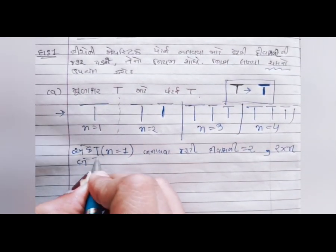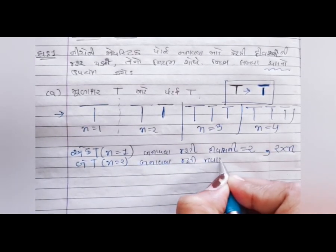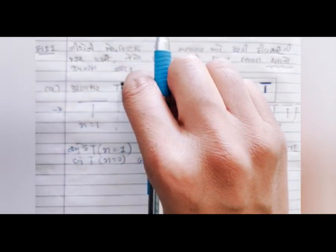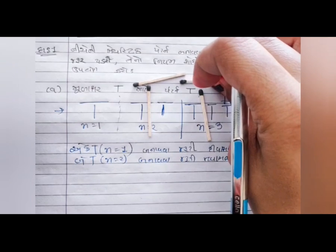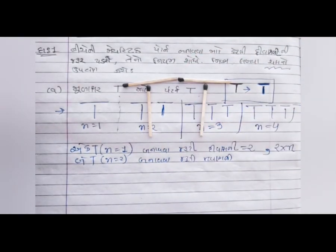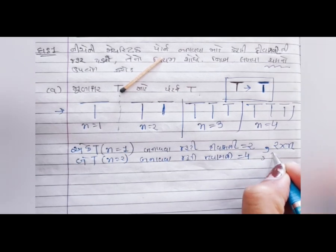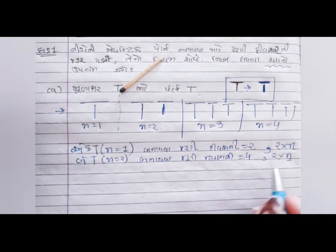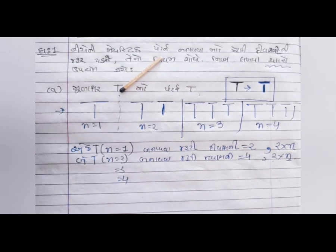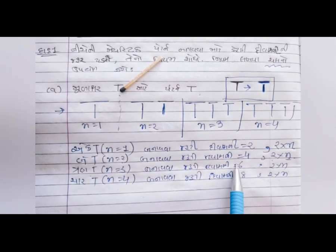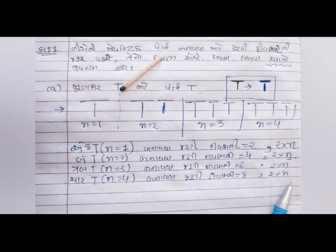હવે જ્યારે 'T' બનાવવા હોય, એટલે N = 2 બનાવવા, જરૂરી દીવાસળી. જ્યારે 1T બનાવ્યું ત્યારે 2 દીવાસળીની જરૂર પડી. 2T બનાવો ત્યારે 4 દીવાસળીની જરૂર પડે. N = 3 બનાવવા 6, અને N = 4 બનાવવા 8 દીવાસળી. દરેક માટે 2 ગુણ્યા N.